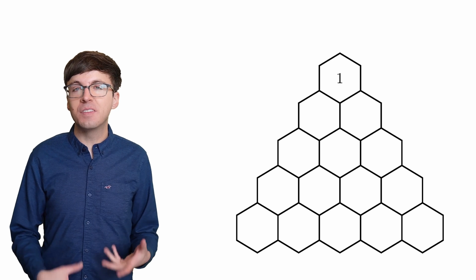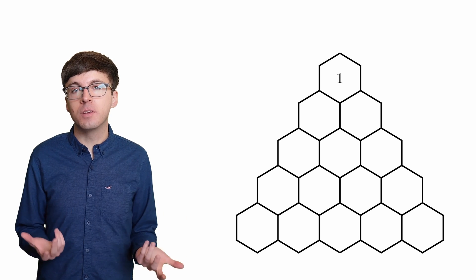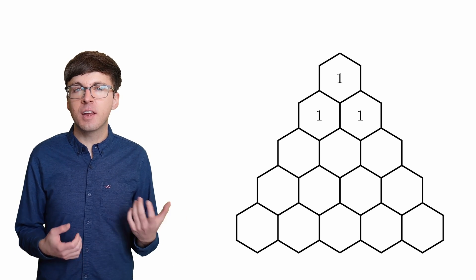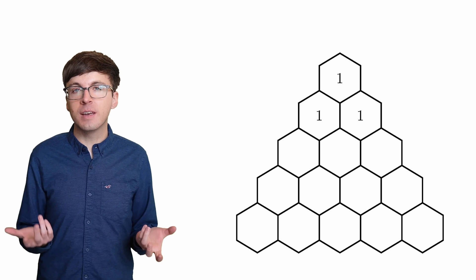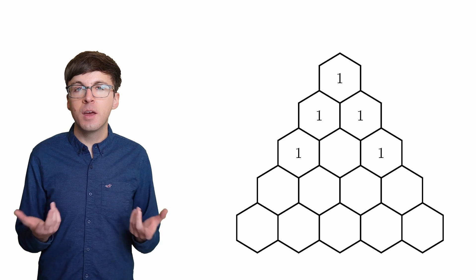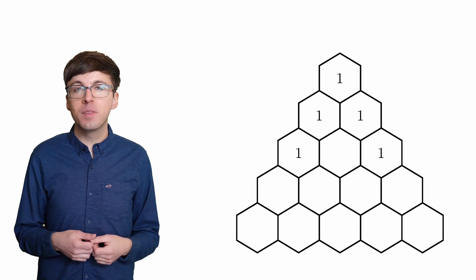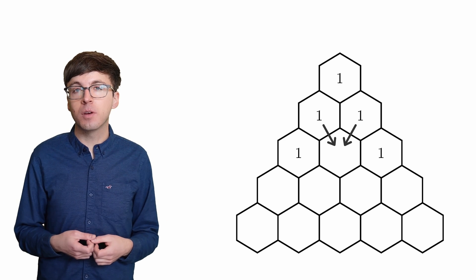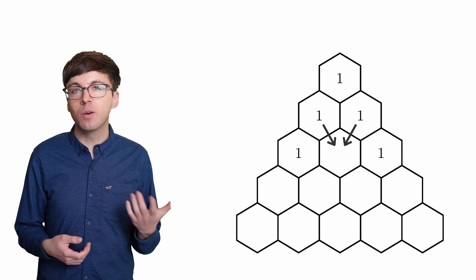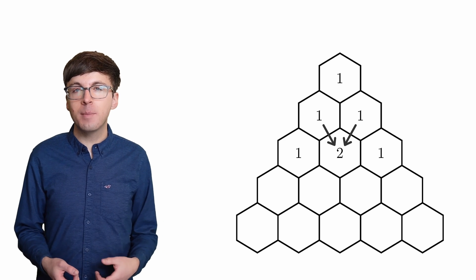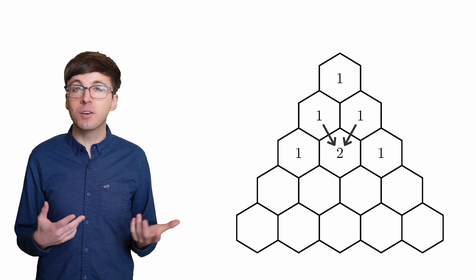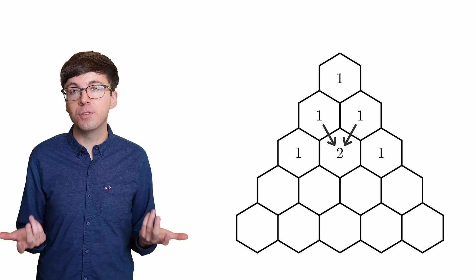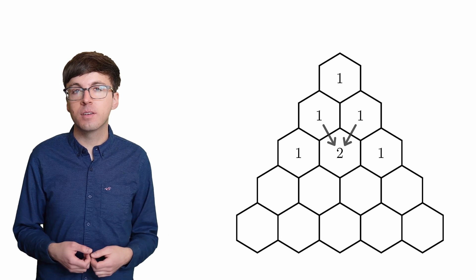We start with 1, and then the next row is 1, 1. Then the next row will start and end with 1, but for that value in the middle we'll add up the two numbers above. We get 1 plus 1 is 2. You can imagine that the values that go beyond the edge of the triangle are all 0 if you want.